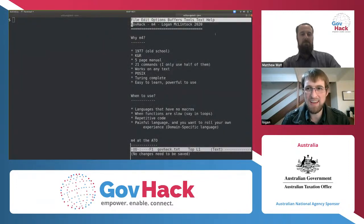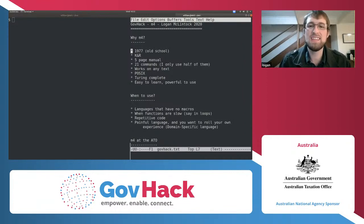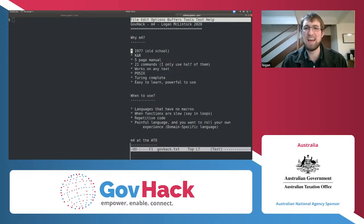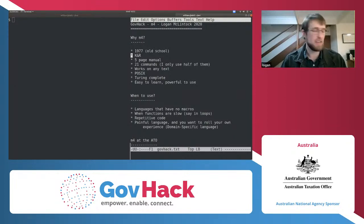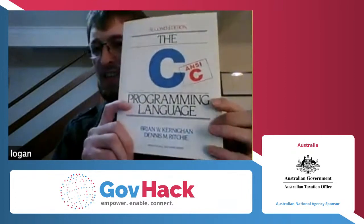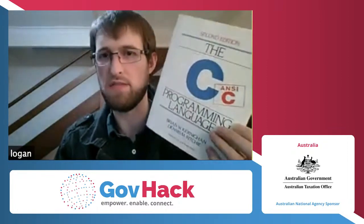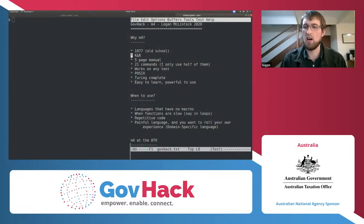Hi everybody. Welcome to GovHack. I'm going to be presenting on M4. So why M4? M4 is very old school — 1977. That is actually the year that the Commodore computer was the first home computer. M4 was written by KNR: Brian Kernighan and Dennis Ritchie. You would probably recognise them from the famous computer book, The C Programming Language. I've got the second edition here — undoubtedly one of the most famous computer books ever written, which gives you an idea of the calibre of M4.